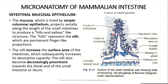The mucosal epithelium is lined by simple columnar epithelium, which projects along the length of the small intestine into hill-and-valley-like structures. These hills represent the villi, which are permanent finger-like projections into the lumen of the intestine. These villi increase the surface area of the intestine, which subsequently increases its absorptive capacity. The villi also become decreasingly prominent towards the distal end of the small intestine, toward the ileum.